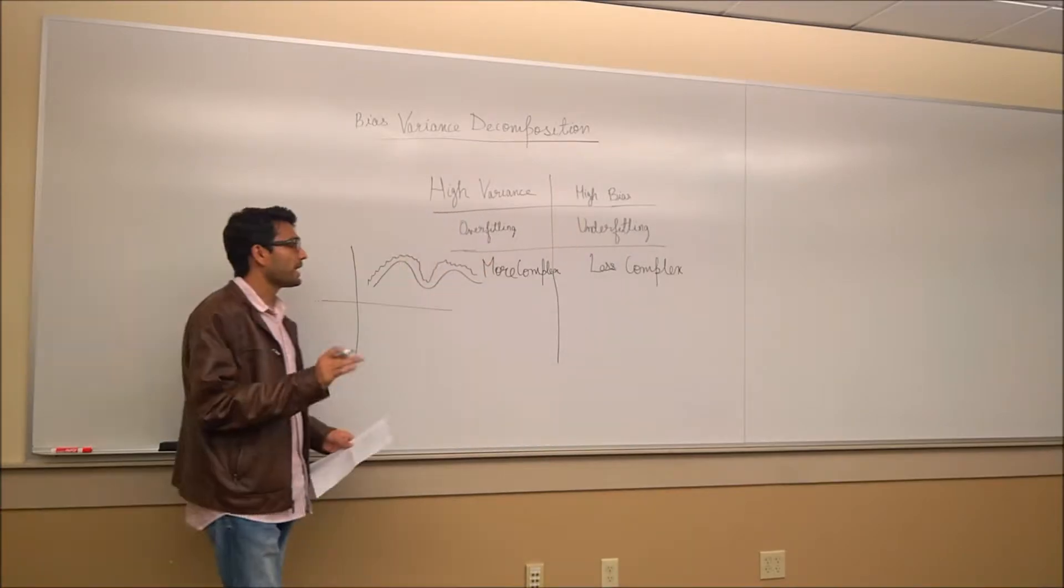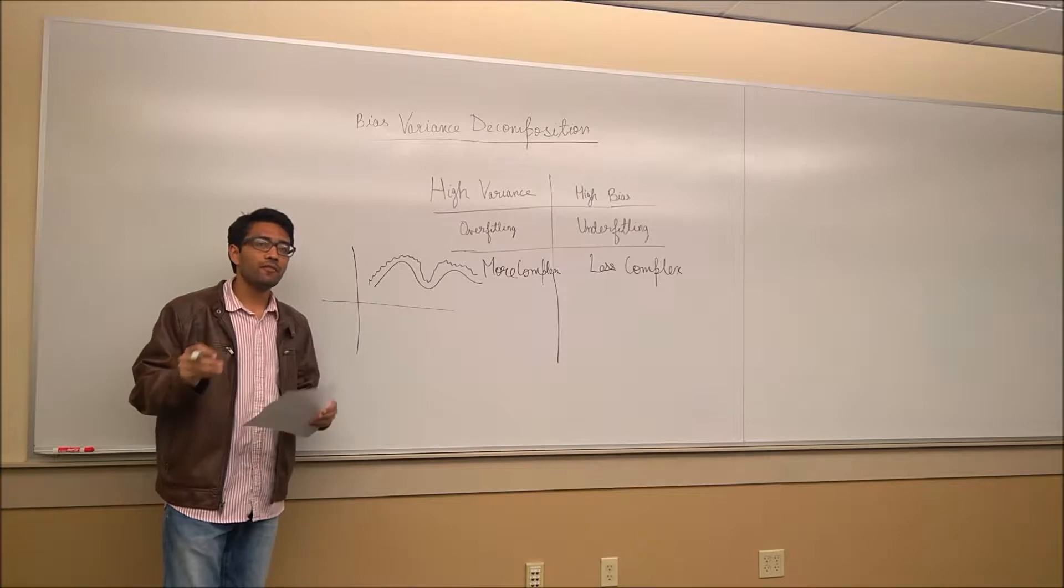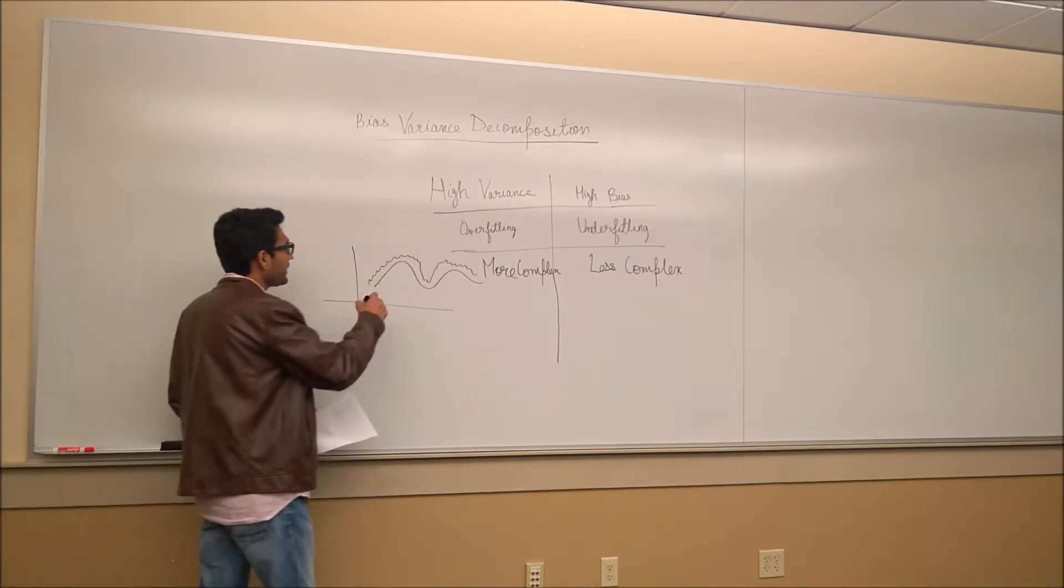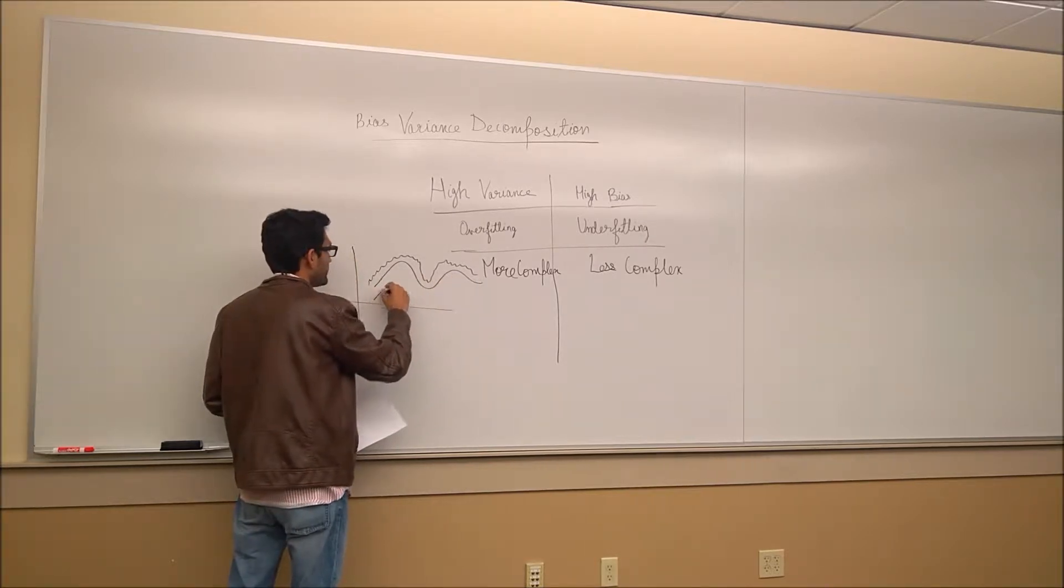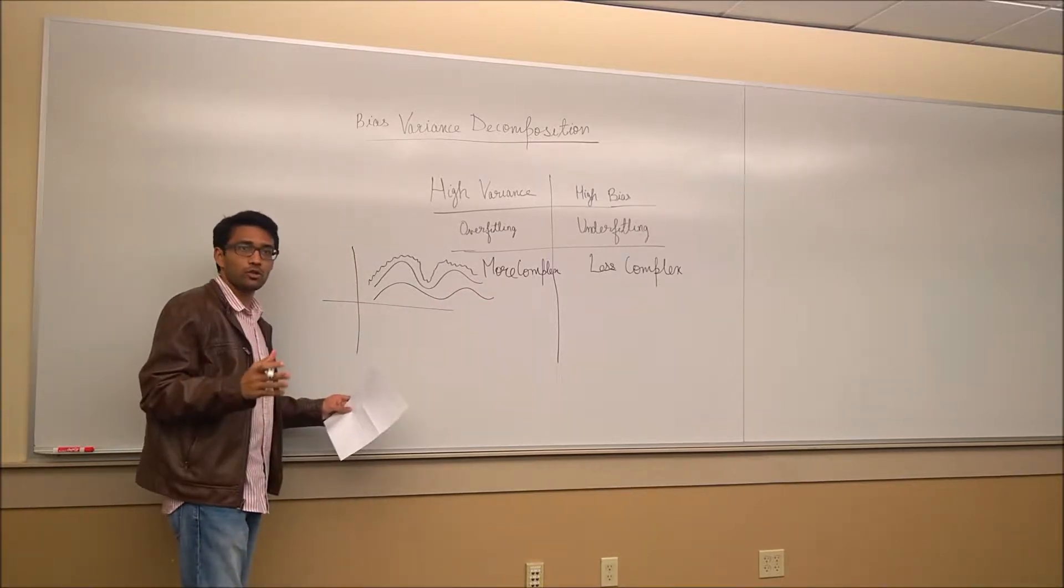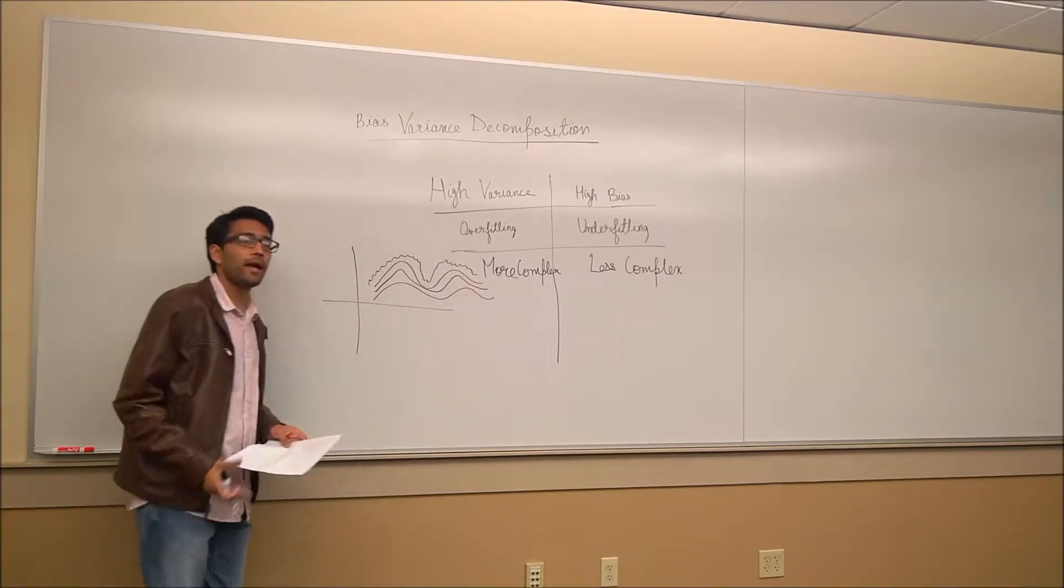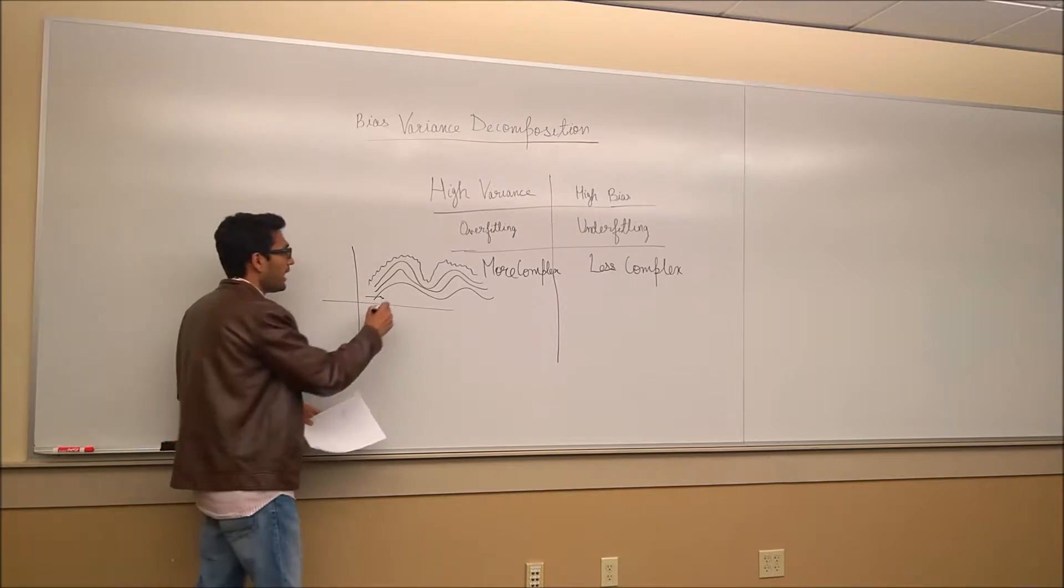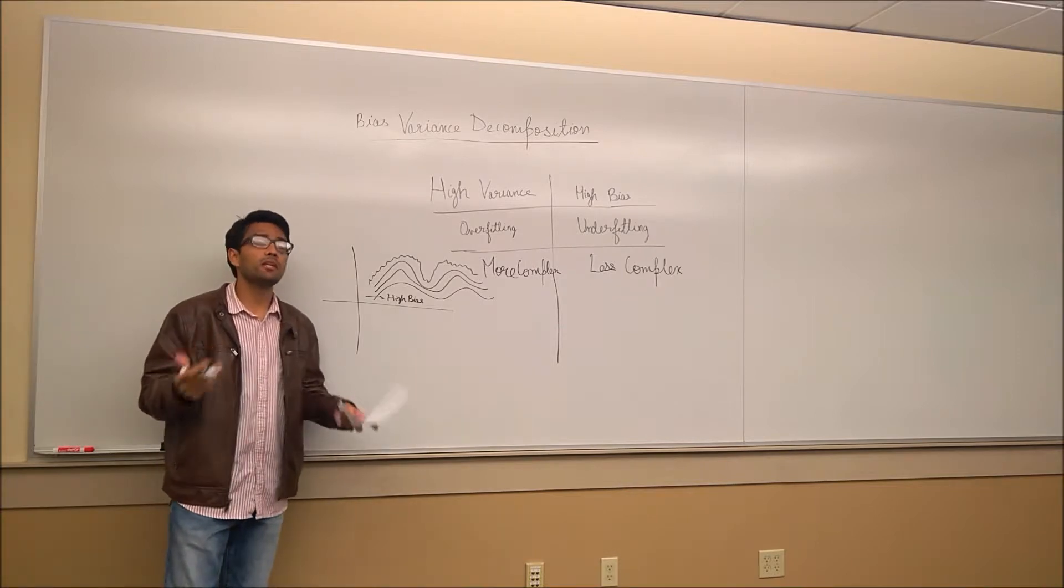What do we mean by bias? By bias, we mean how far away are we from getting the right value. So let's say if this was the function that I was looking for, and this is the function that I predicted, it is pretty far off my actual function. But this is still closer to my actual function. So we would say that this predictor has high bias.